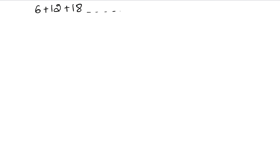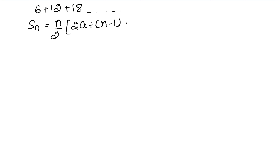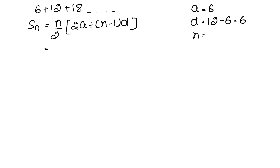We know n is 40 terms, so we need to find the sum. We don't need to find the nth term; we can directly find the sum. The formula for sum is n/2 into (2a + (n−1)·d). Here a is 6, because the first number divisible by 6 is 6, and d is 12 minus 6, that is 6.